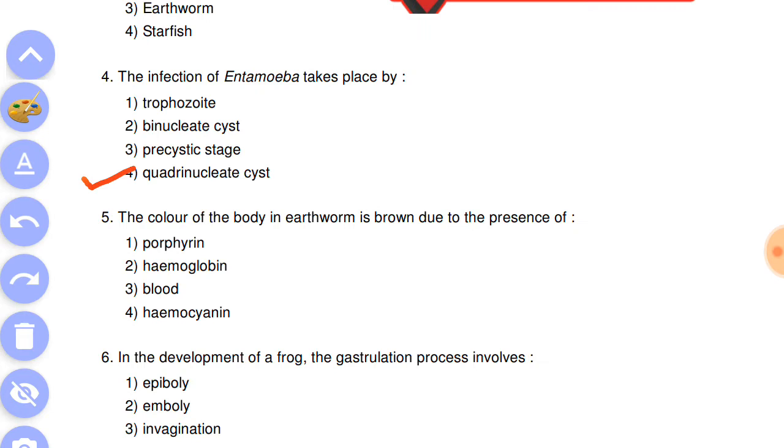The color of the body of the earthworm is brown due to the presence of answer: porphyrin.